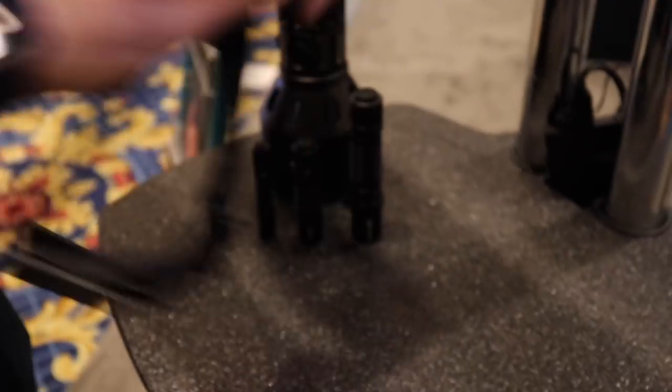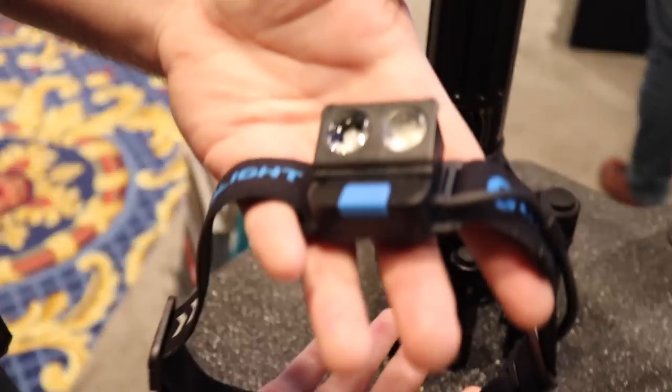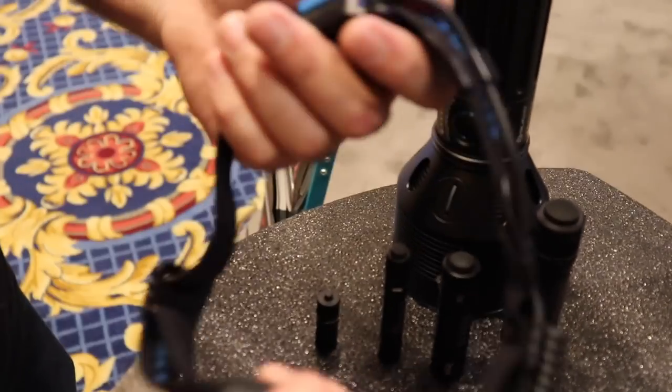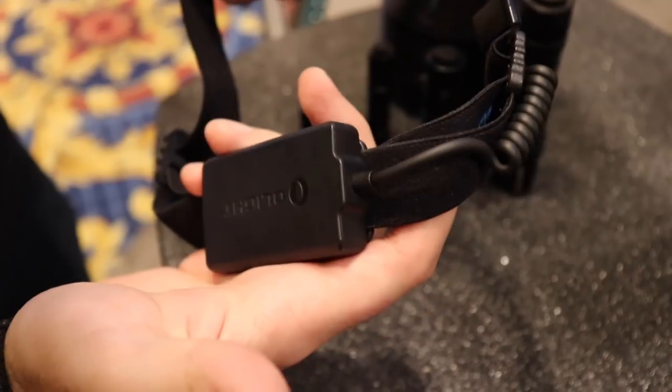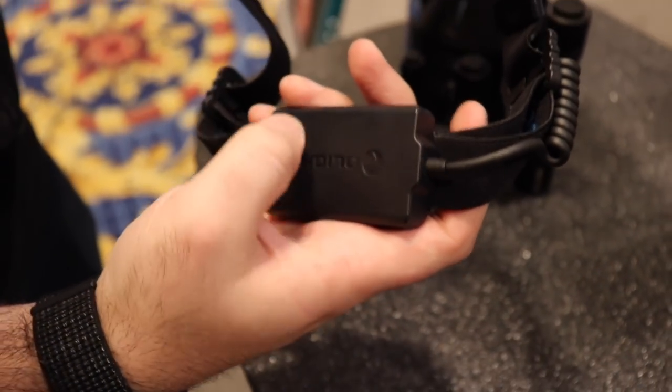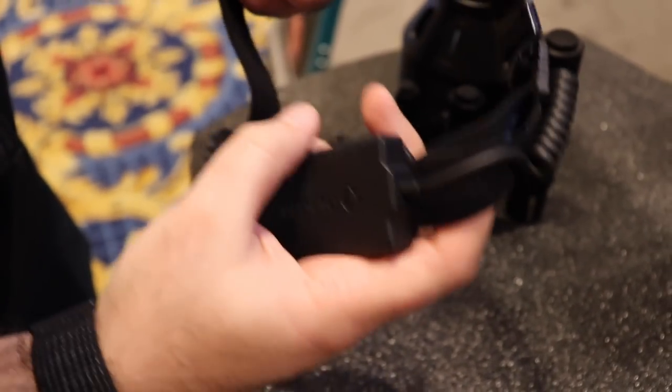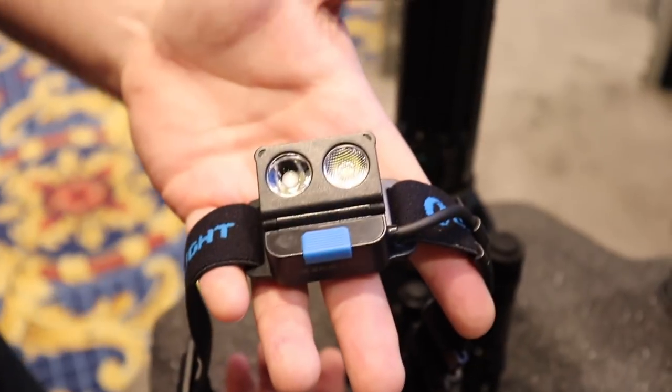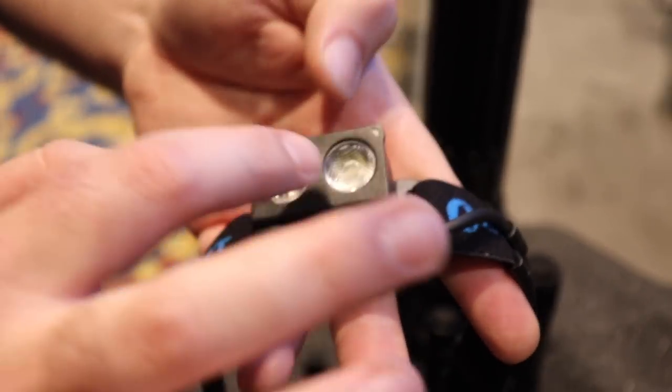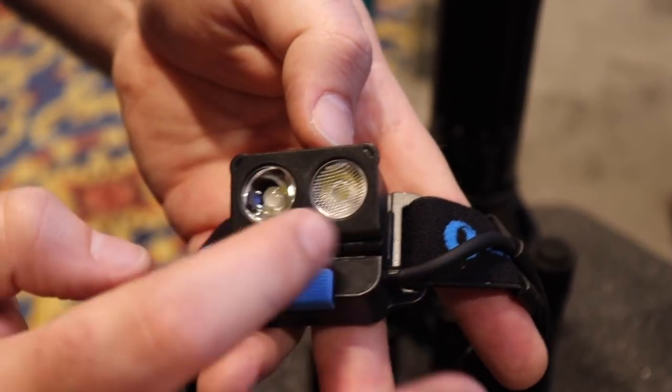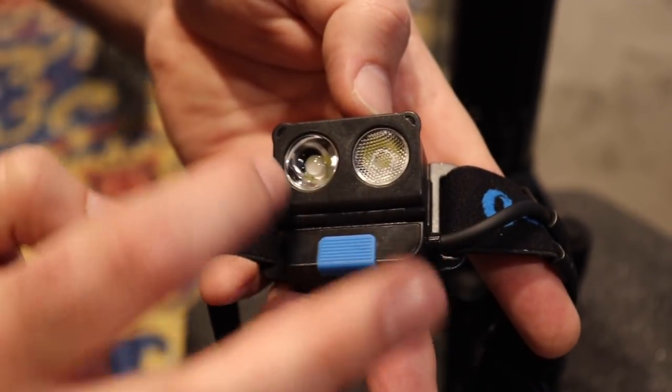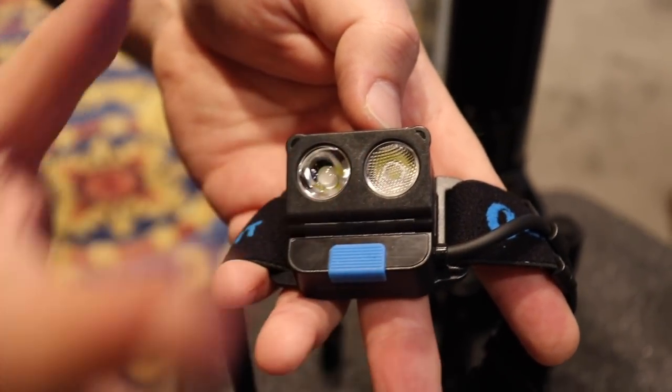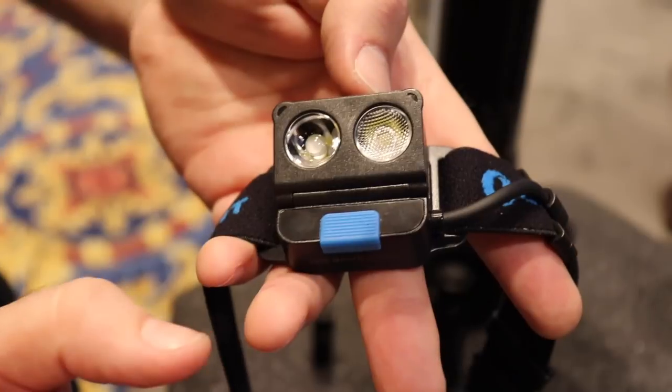Another quick one to show you guys. This is the H16. This is our new headlamp. If you're familiar with the H15 that we have, it's got that same design where you have the battery pack on the back and then you have the LEDs up front. This has two LEDs. So we have a bead lens on this side, and then we have a smooth lens here. So one is for width and the other is for distance.